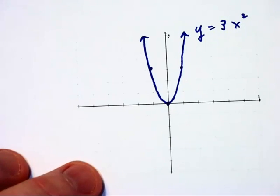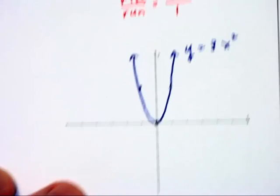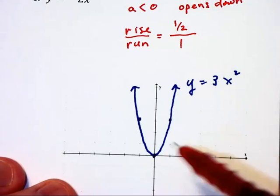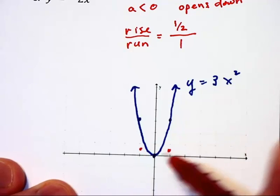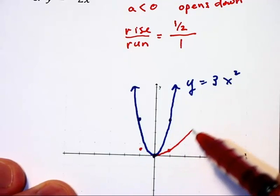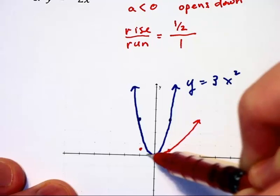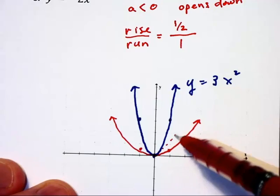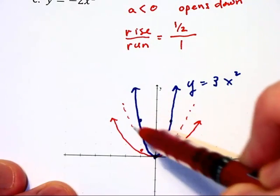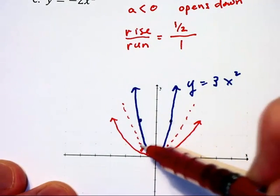For y equals one half x squared, I just mentioned a moment ago that we can rise a half and then run one and get two points on our graph that way. So you can tell that this is going to open a whole lot wider than your standard parabola, which actually is going to be right in here, which I'm drawing with the dotted line, going through one, one and negative one, one.